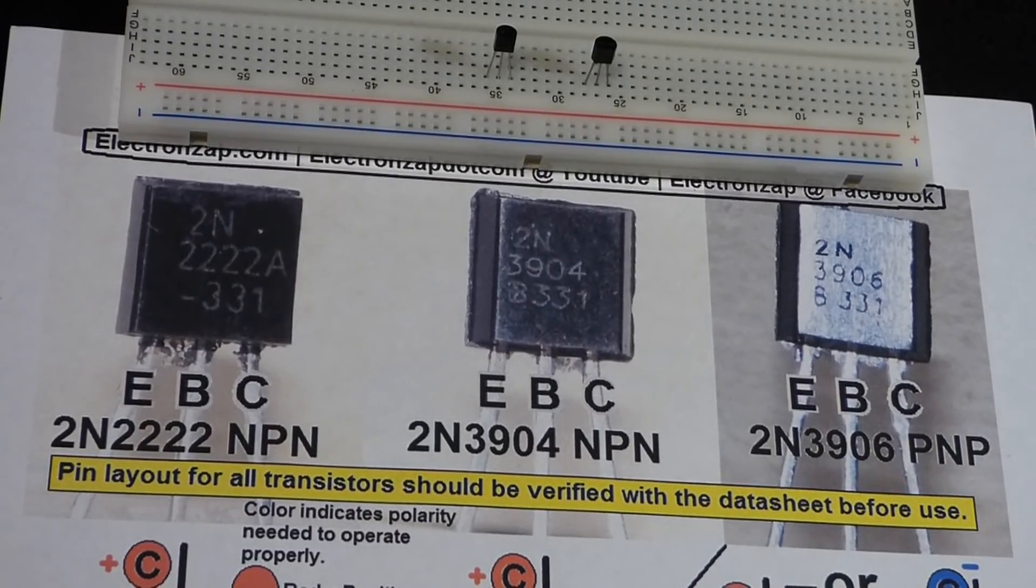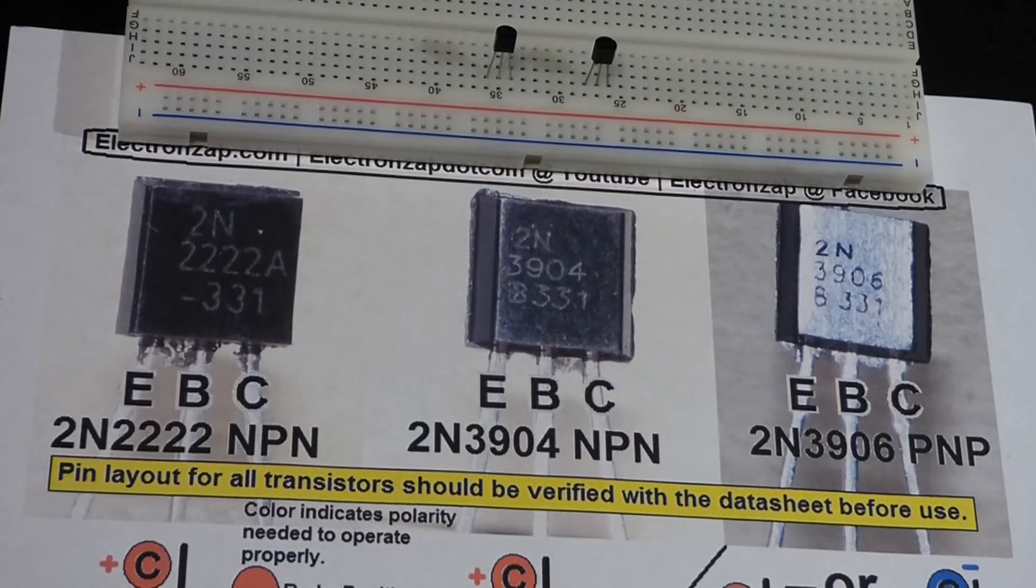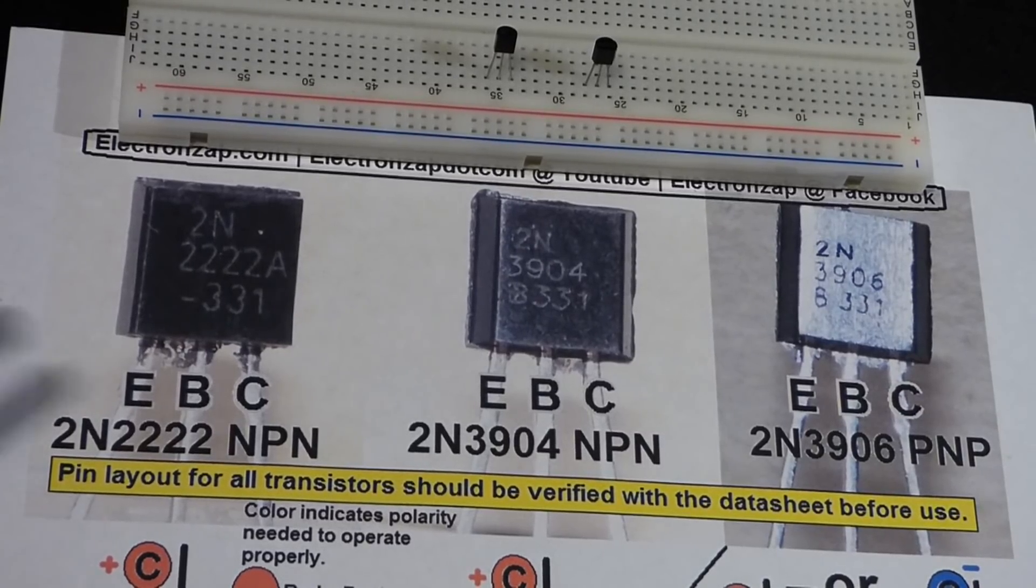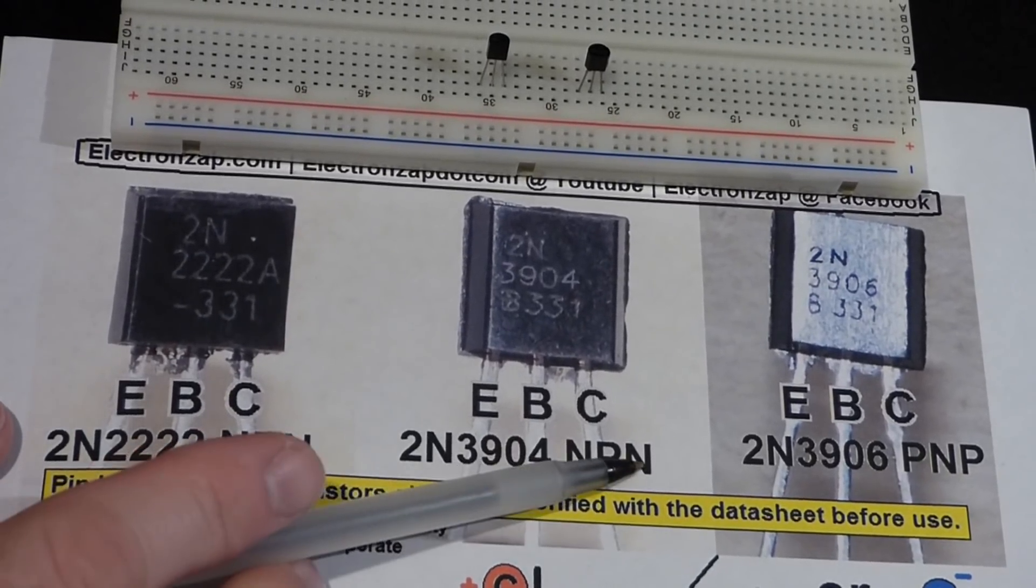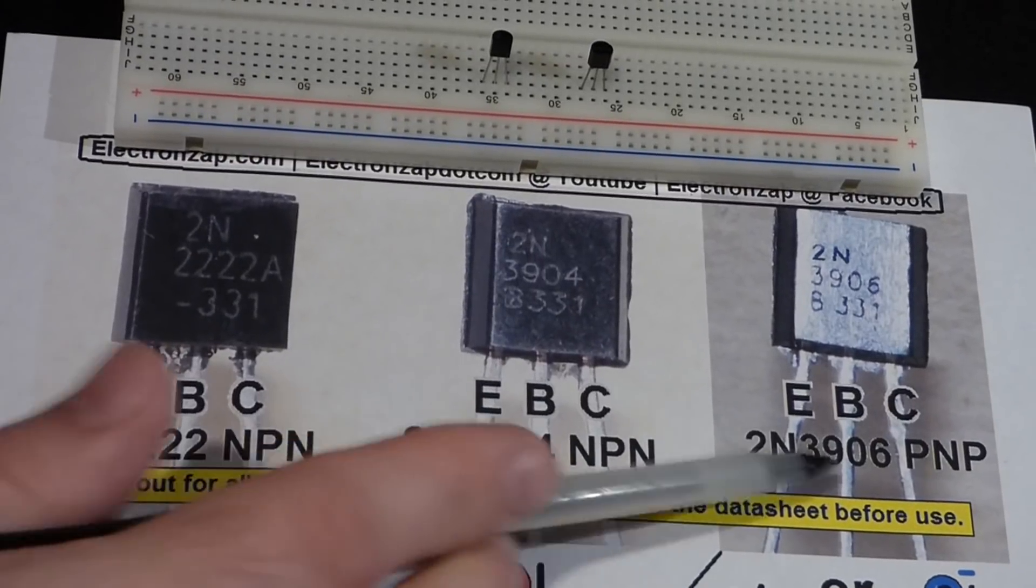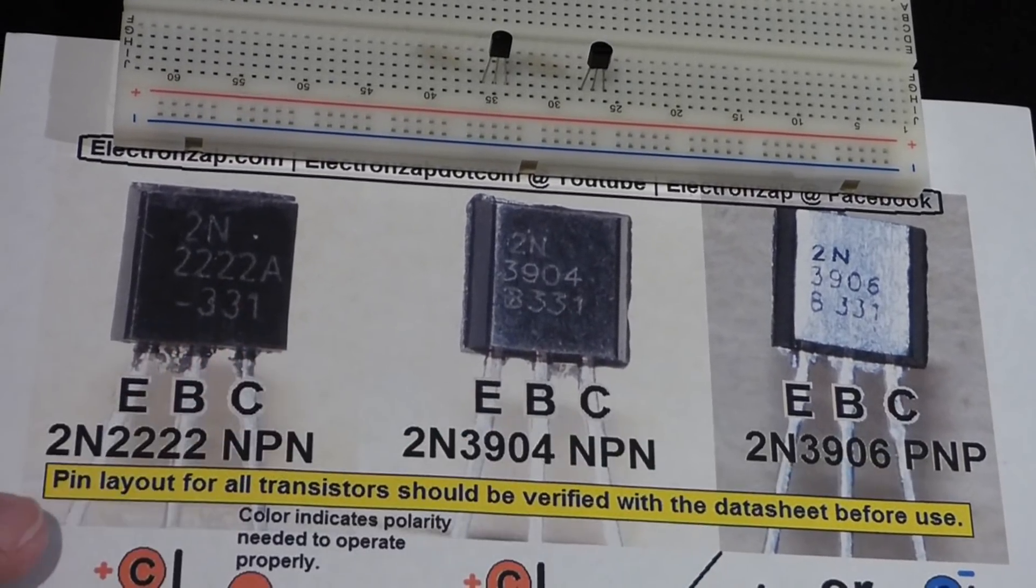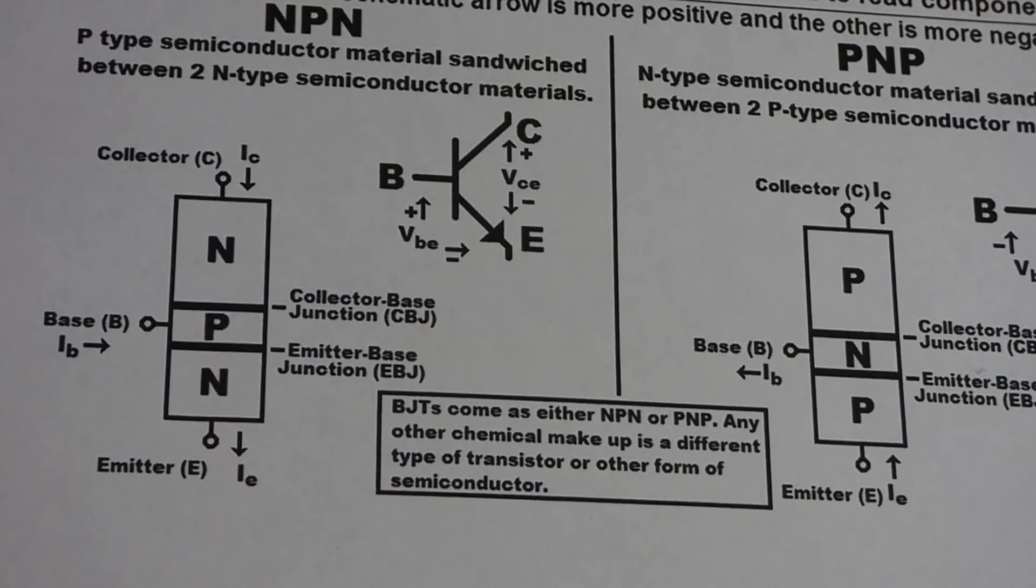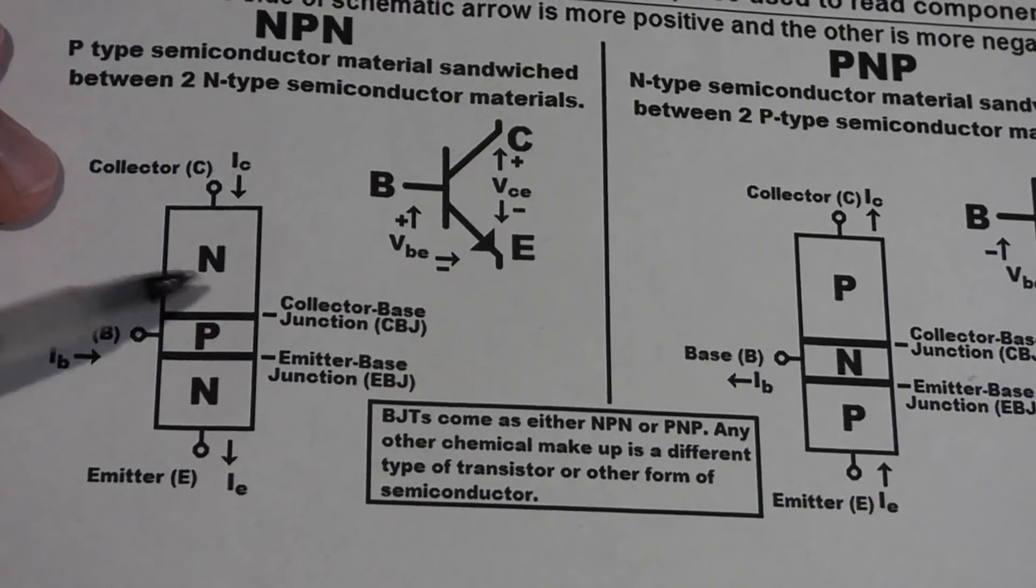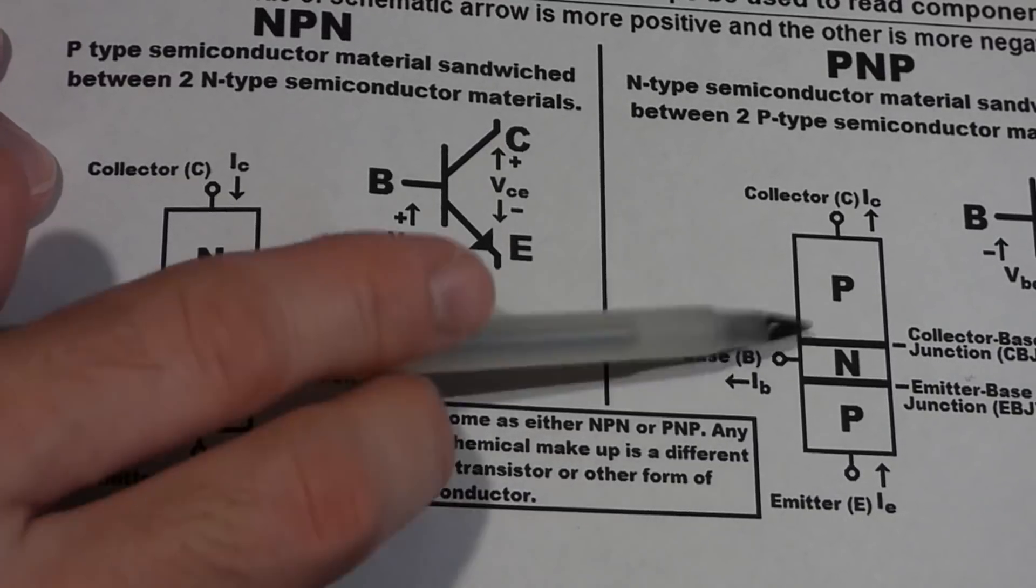Now moving along, when you're dealing with the bipolar junction transistor, which is the focus of this video, remember other types of transistors can come in this packaging too, but for the bipolar junction transistor, you have NPN type bipolar junction transistors and PNP type bipolar junction transistors. Down here, we'll look at what that NPN and PNP mean.